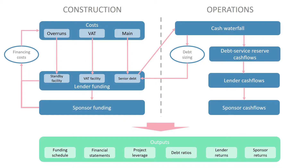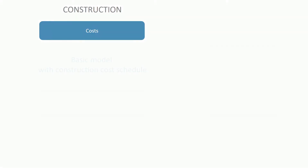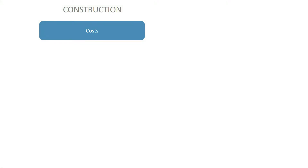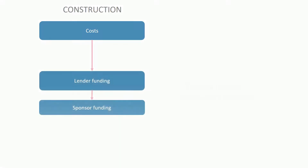We start at the beginning. You'll be given a basic model which contains a projection of expenses required to build the project. Nothing gets going without any cash — the next step is to build out a fund matching engine for the project.